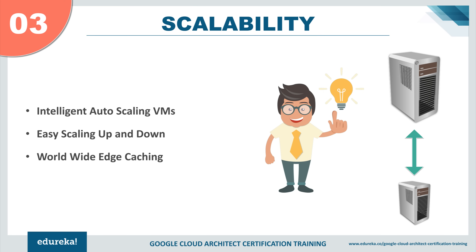Coming to the top three reasons — at number three we have scalability. You can easily scale your machines up or down depending on your requirements, and everything is made simpler by Google. Google VMs are auto-scalable with an autoscaler that scales instances up or down according to the traffic received, saving money and making tasks simpler. This is a really cool feature as it decreases overhead and reduces the engagement effort required for this job.